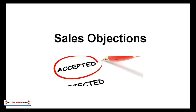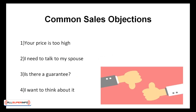Often the answer is understanding what is preventing your potential client from making a decision in your favor. Once you know why he or she is uncertain, you can reply directly to that specific objection. Common sales objections include: prices being too high, I need to discuss this with my spouse, is there a guarantee, or I want to think about it first.